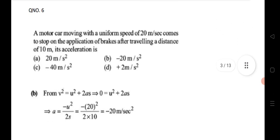Sixth question: a motor car moving with uniform speed comes to a stop after applying brakes, traveling a distance of 10 meters. Initial velocity is given and final velocity is zero since it stops. With distance given, substitute into the third equation v² − u² = 2as to find the acceleration.